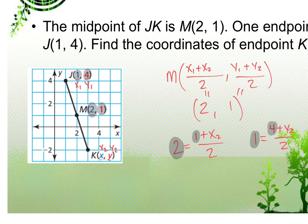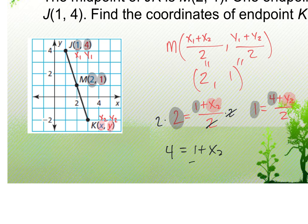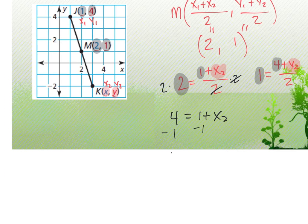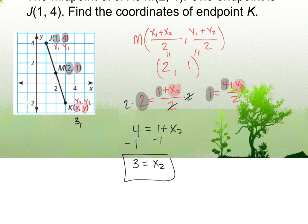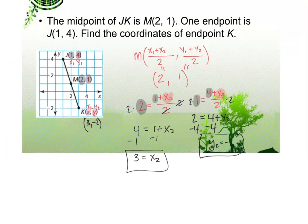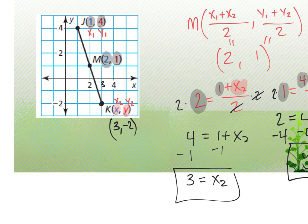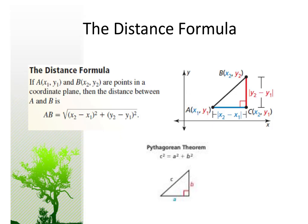Solving the first equation: multiply both sides by 2 to get 1 + x₂ = 4, then subtract 1 to get x₂ = 3. Solving the second: multiply both sides by 2 to get 4 + y₂ = 2, then subtract 4 to get y₂ = −2. So the other endpoint K is at (3, −2).